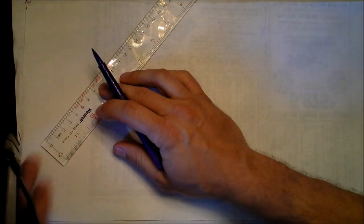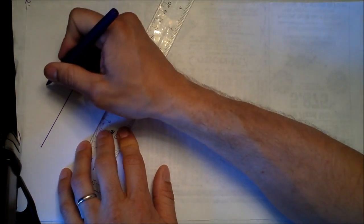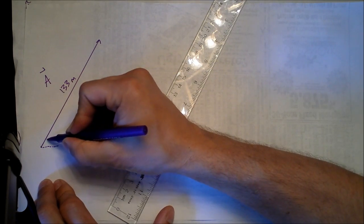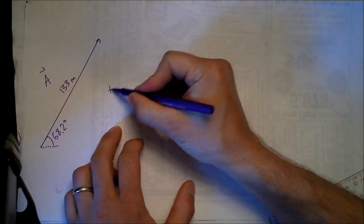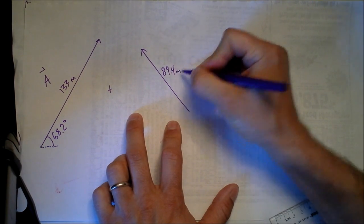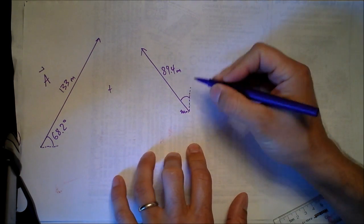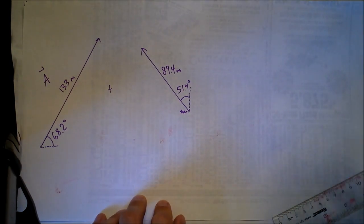For the example, I'll begin with step one: draw the two vectors separately. Vector A is 133 meters long at an angle of 68.2 degrees from horizontal. Then vector B — which we're supposed to add to A — goes like this, a little bit shorter at 89.4 meters long. The angle for B is measured off a different axis, and they tell you it's 51.4 degrees.